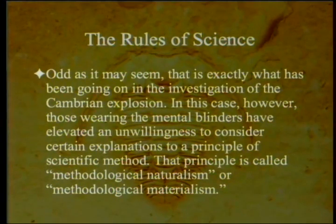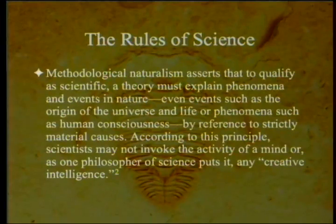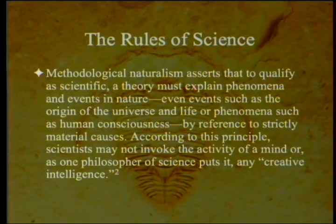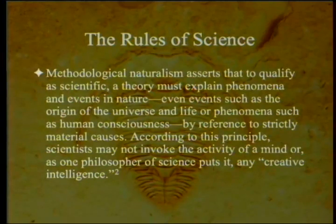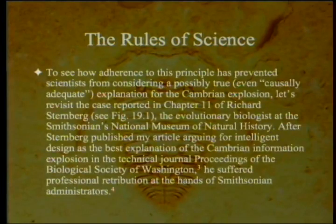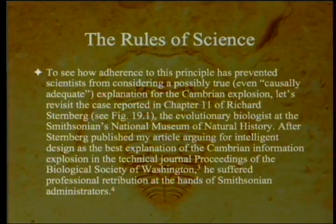That principle is called methodological naturalism or methodological materialism. Methodological naturalism asserts that to qualify as scientific, a theory must explain phenomena and events in nature — even events such as the origin of the universe and life, or phenomena such as human consciousness — by reference to strictly material causes. According to this principle, scientists may not invoke the activity of a mind or, as one philosopher of science put it, any creative intelligence. To see how adherence to this principle has prevented scientists from considering a possibly true, even causally adequate explanation for the Cambrian explosion, let's revisit the case of Richard Sternberg.